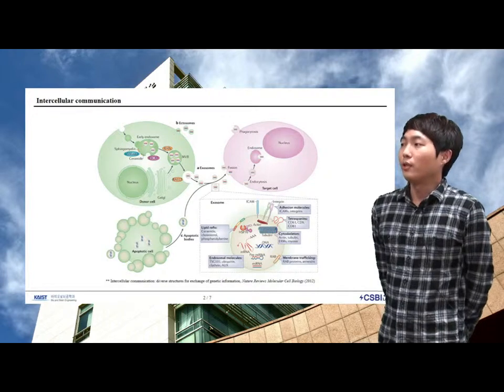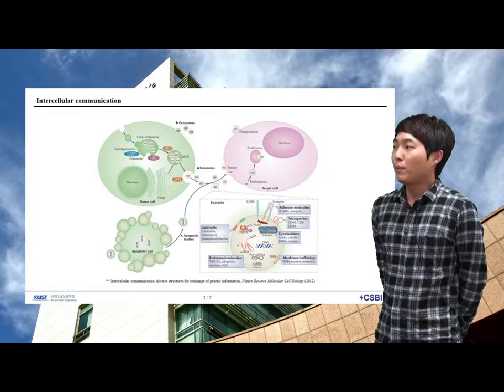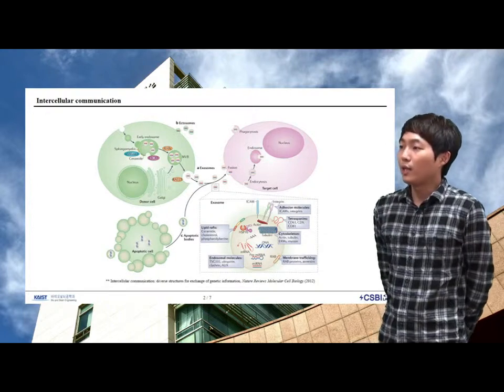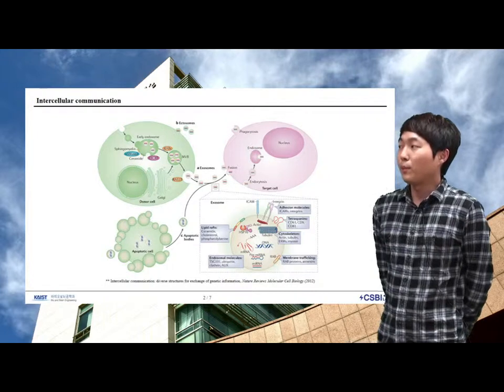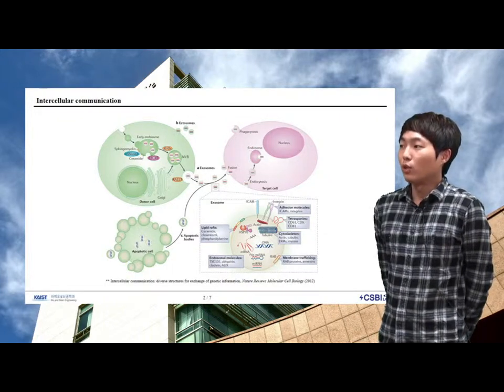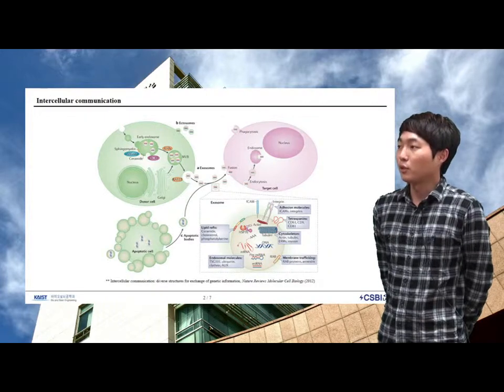Extracellular vesicles secreted into the extracellular environment contain functional mRNA, microRNA, and DNA molecules that can be taken up by recipient cells through mechanisms including fusion with the plasma membrane, phagocytosis, and endocytosis.